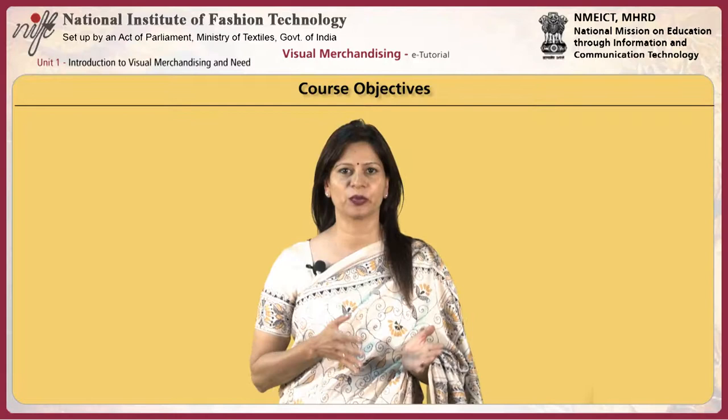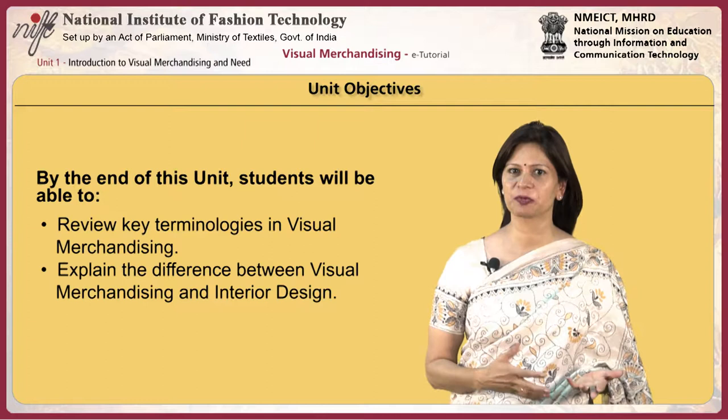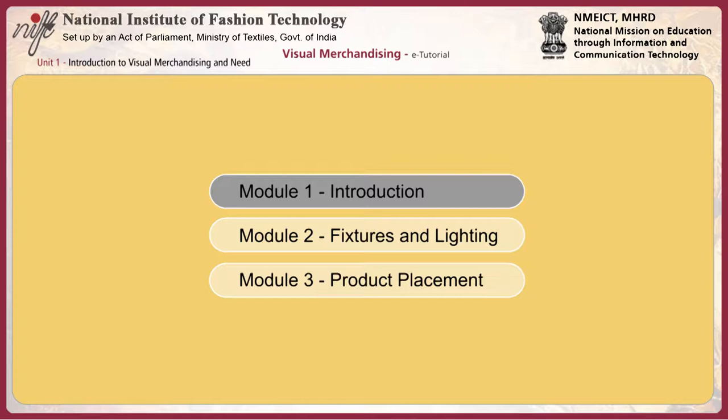By the end of this unit, students will be able to understand key terminologies in visual merchandising and understand the difference between visual merchandising and interior design. The first module introduces you to visual merchandising, explains the need for it, and reviews the different terminologies with regard to layout and design, fixtures and lighting, displays and product placement.